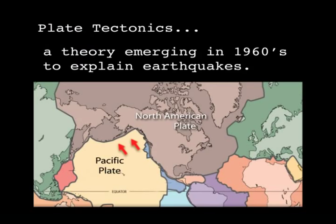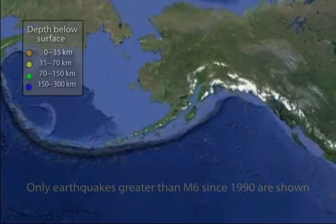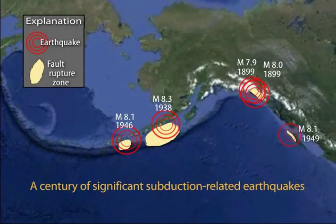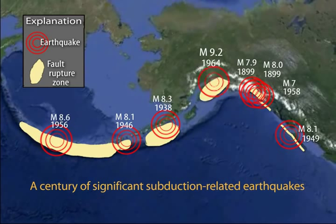Alaska has over 24,000 measured earthquakes every year, more than the rest of the U.S. combined. Shown here are only those above magnitude 6. On average, at least one strong magnitude 7 earthquake occurs every year. Between 1899 and 1986, eight earthquakes of magnitude 8 or greater impacted different areas of the Aleutian subduction zone.